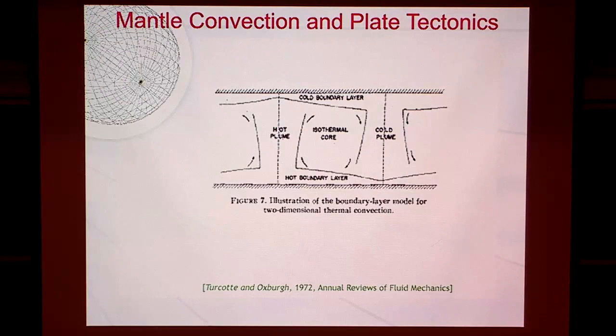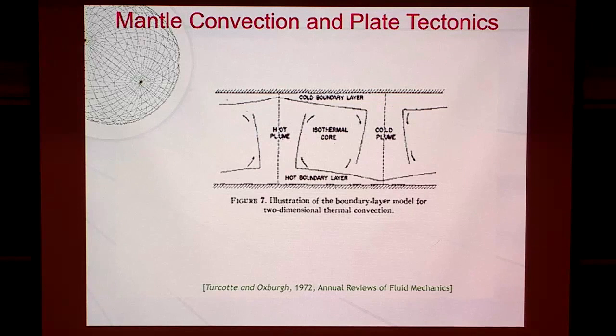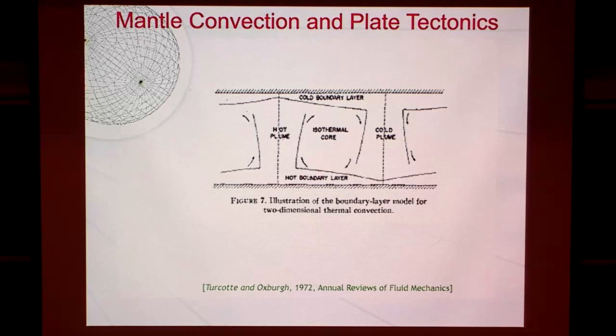The fact that mantle convection and plate tectonics are one and the same thing has been known for a very long time. Already at the beginning of the plate tectonics revolution, in the mid to late 60s and early 70s, there are papers pointing out that you get a thermal boundary layer at the top with velocities very similar to what you'd expect for plate velocities. So what is the difficulty? Why are we still writing papers? The driving forces of plate tectonics, connecting them with mantle flow — partly it's because of rheology.